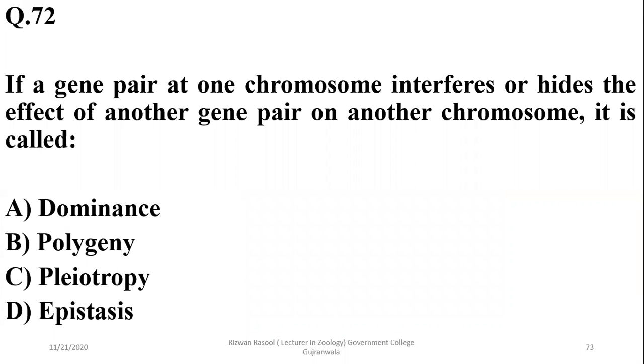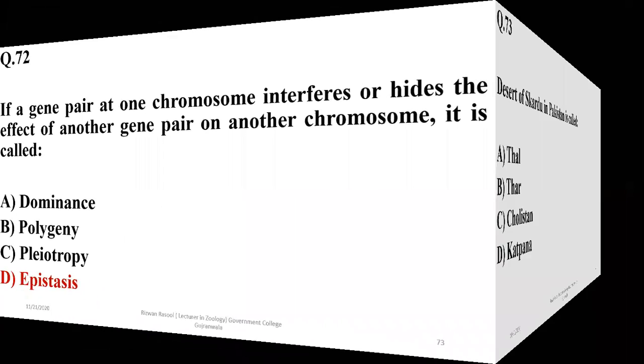If a gene pair at one chromosome interferes with or hides the effect of another gene pair on another chromosome, it is referred to as epistasis. So the right option is D.